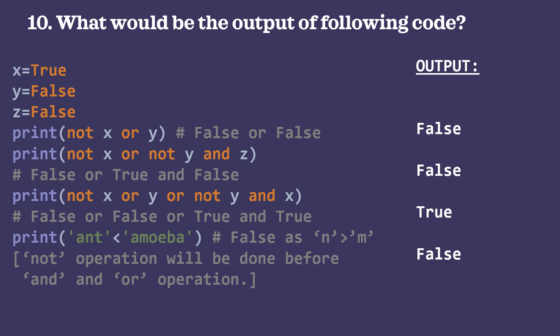Next: print(not x or not y and z). Not is evaluated first: not x = False, not y = True. So: False or True and False. Then and: True and False = False. Then or: False or False = False. The final output is False.